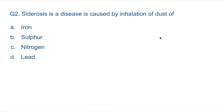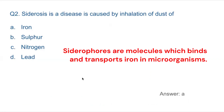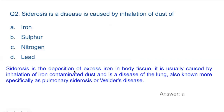Question 2: Options are A — iron, B — sulfur, C — nitrogen, D — lead. Siderosis is a deposition of excess iron in body tissues. It is usually caused by inhalation of iron-contaminated dust and is a disease of the lung, also known more specifically as pulmonary siderosis or welder's disease. When welding is done, dust comes out of iron, and when the dust is inhaled, it causes siderosis because the dust settles in the lungs.